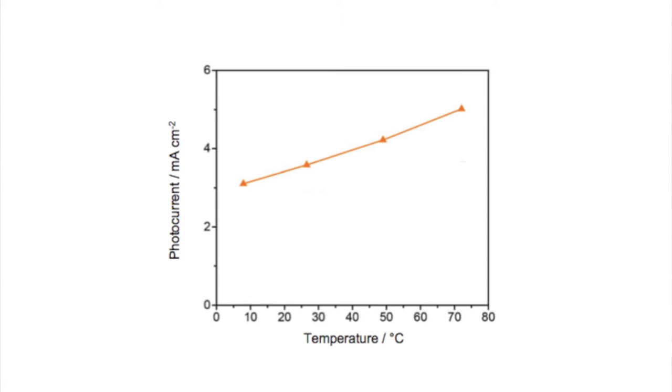Check out this plot. So here we have a plot for iron oxide. And what you can see is by increasing the temperature from just 10 degrees to 70 degrees, we see an increase in the photocurrent of over 50%.